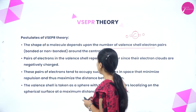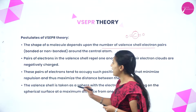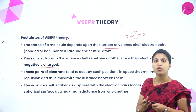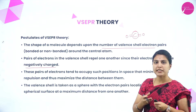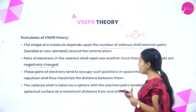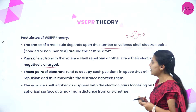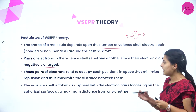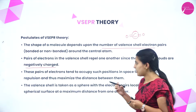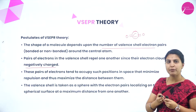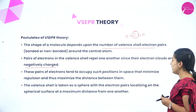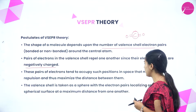Pairs of electrons in the valence shell repel one another since their electron clouds are negatively charged. Whatever electron pairs surround the central atom will repel because electrons are negatively charged — same charges repel. These pairs tend to occupy positions in space that minimize repulsion and maximize the distance between them. The valence shell is taken as a sphere with electron pairs localized on its surface at maximum distance from one another.